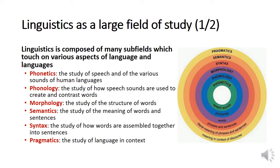Then there is morphology, which is the study of the structure of words — how words are composed of different parts, and the different phenomena we can observe across languages. We have semantics, the study of the meaning of words and sentences. We have syntax, the study of how words are assembled together into sentences. And pragmatics, which is how we use language in context — how we build our sentences and choose our words differently in different contexts.